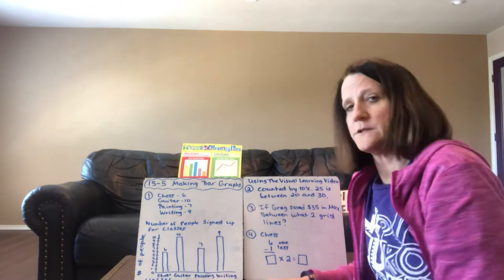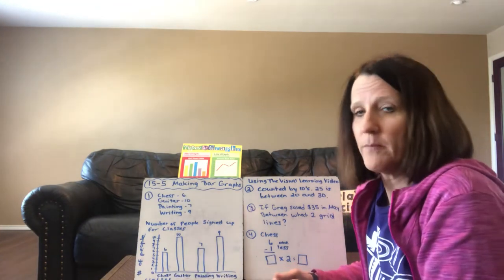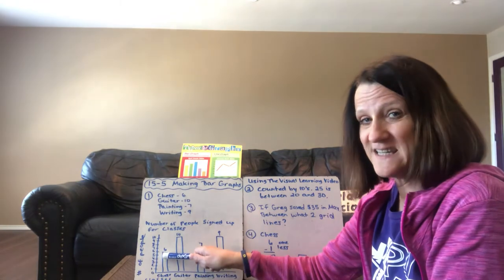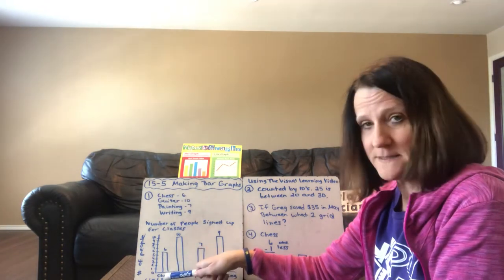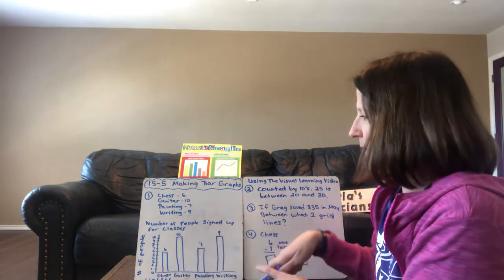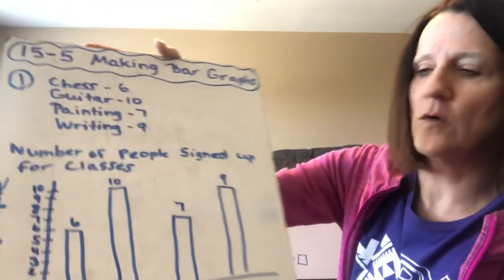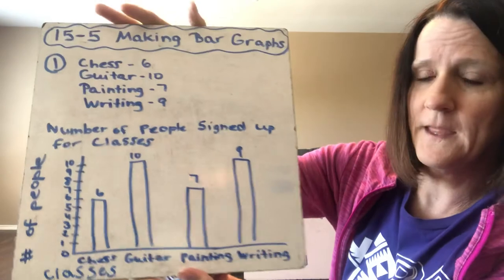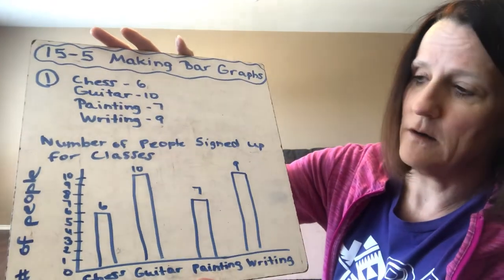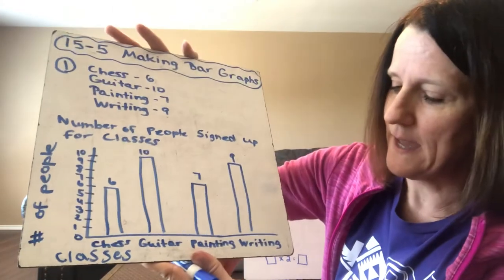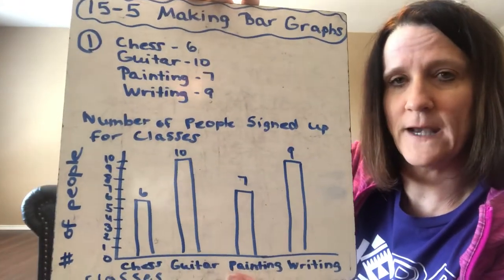So then what you are going to do is draw the bars. You're going to draw a bar that goes up to the six for chess. You're going to draw a bar that goes up to the ten for guitar. You're going to draw a bar that goes up to the seven for painting and a bar that goes up to the nine for writing.